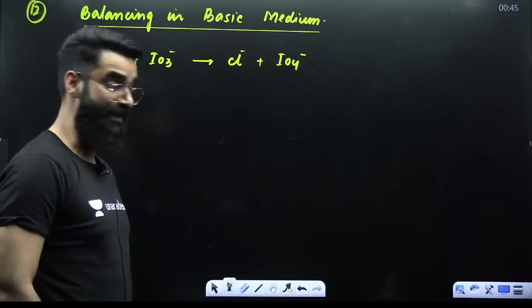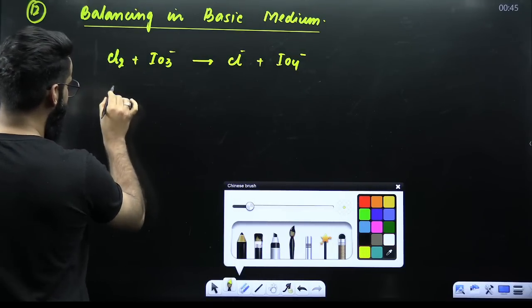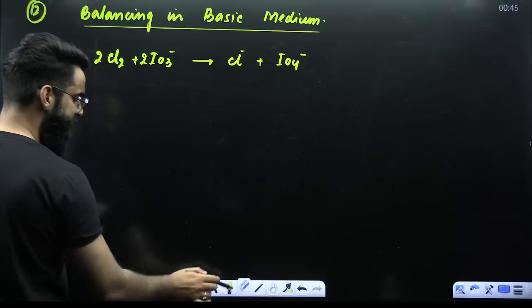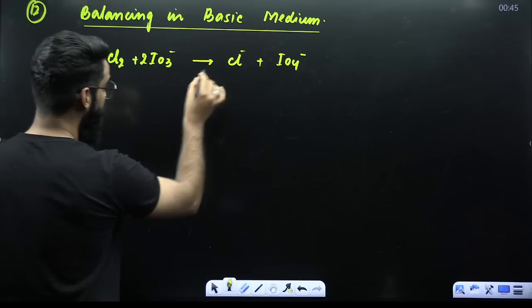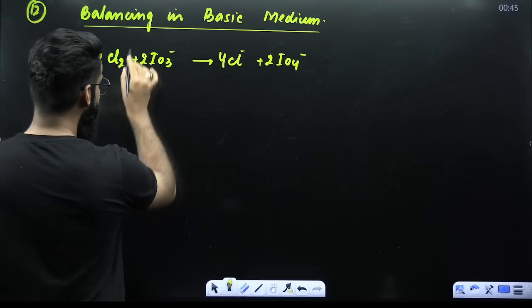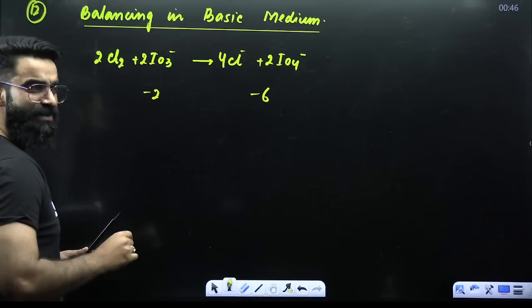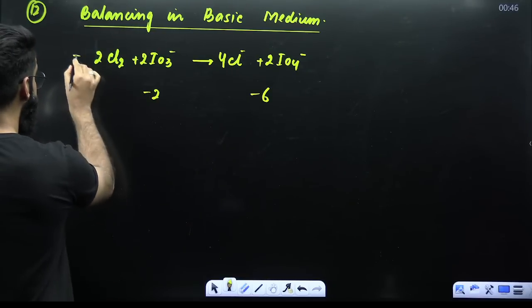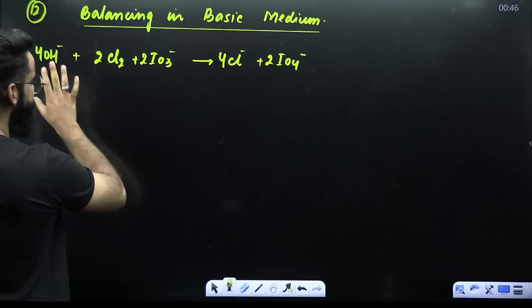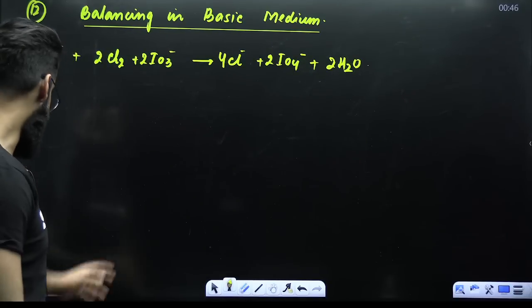Concept 12: balancing reactions in basic medium. First, find the N factors of reactants — here both are 2. Criss-cross the N factors (place 2 as coefficients). Then balance all atoms except hydrogen and oxygen: 4 chlorines and 2 iodines on each side. In basic medium, balance charge first: reactant side has −2 total charge, product side has −6. Left side is deficient by 4 negative charges, so add 4 OH⁻ on the left. Then balance oxygen with water: 10 oxygens on one side vs 8 on the other, so add 2 water molecules to get the balanced equation.